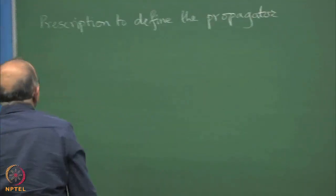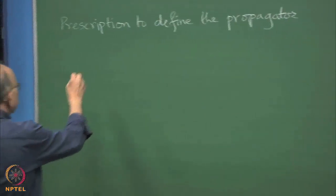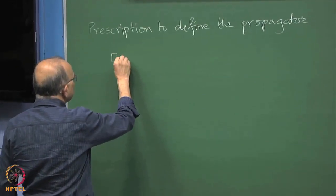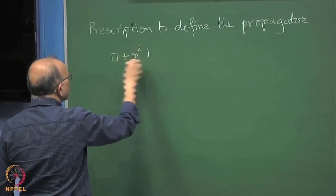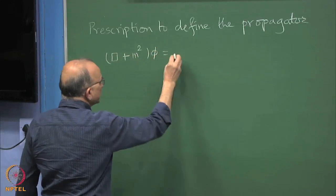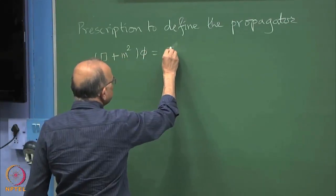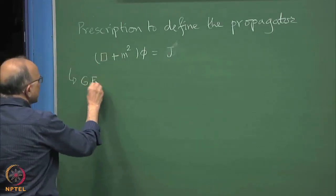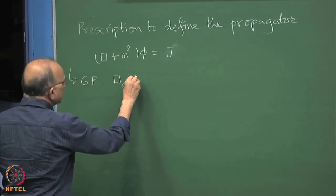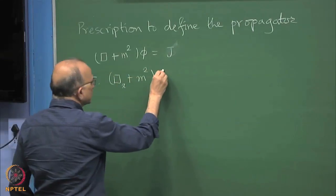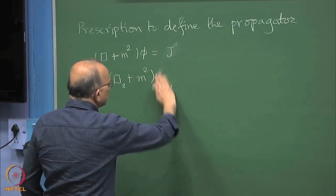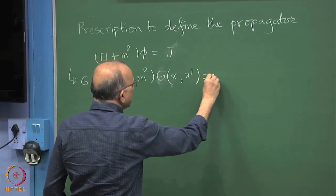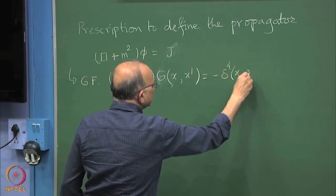Basically the propagator is inverse of this operator. Here we have box plus m square phi, and in the notation where it has some external function j, we convert it into a Green's function problem. The Green's function problem says, let us put G at first, some Green's function of x, x prime, and now we set it equal to minus delta of x, x prime.